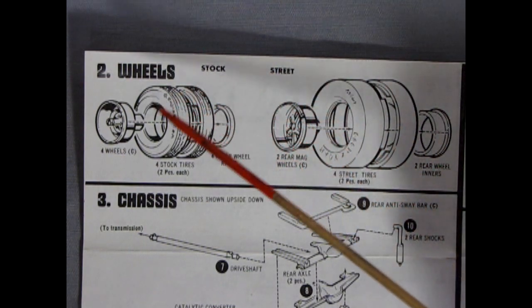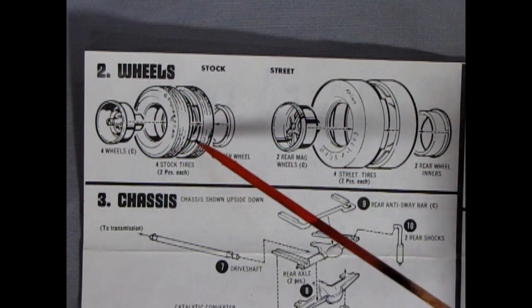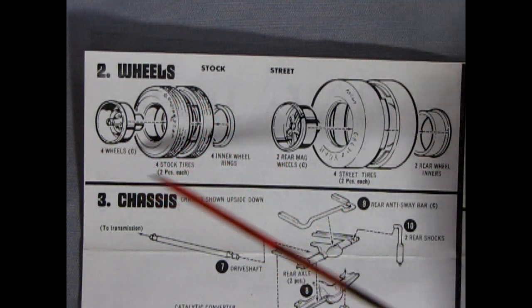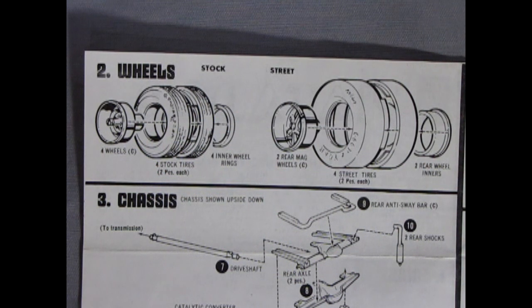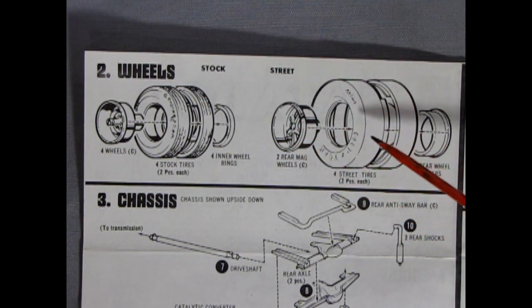Panel two shows our wheels going together with the AMC rally wheel in the center. Then our two-piece tires with an inner ring at the back. And you build four of these for the stock version. And then in the street version you just use the two mag wheels at the back. Well four mag wheels all the way around of course. But then the big street tires in two pieces and the two rear inners.